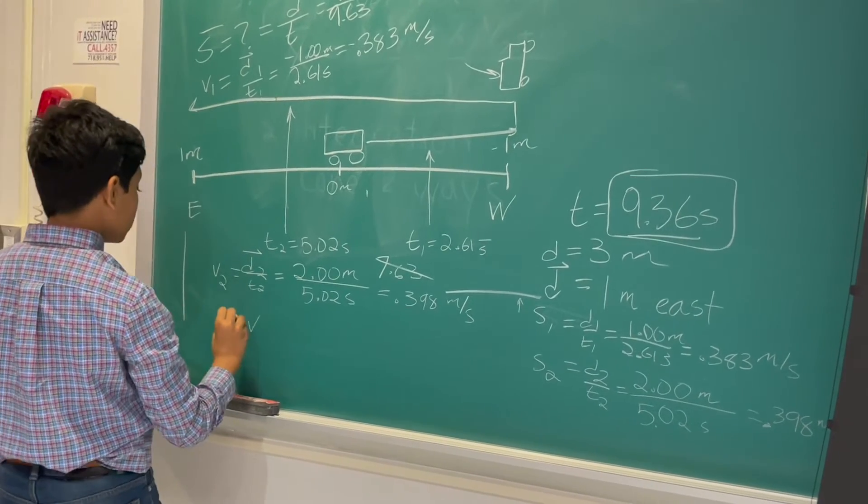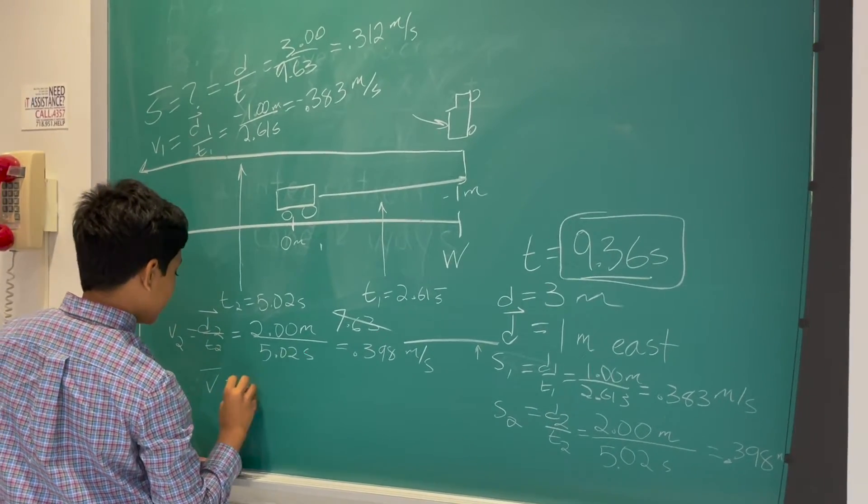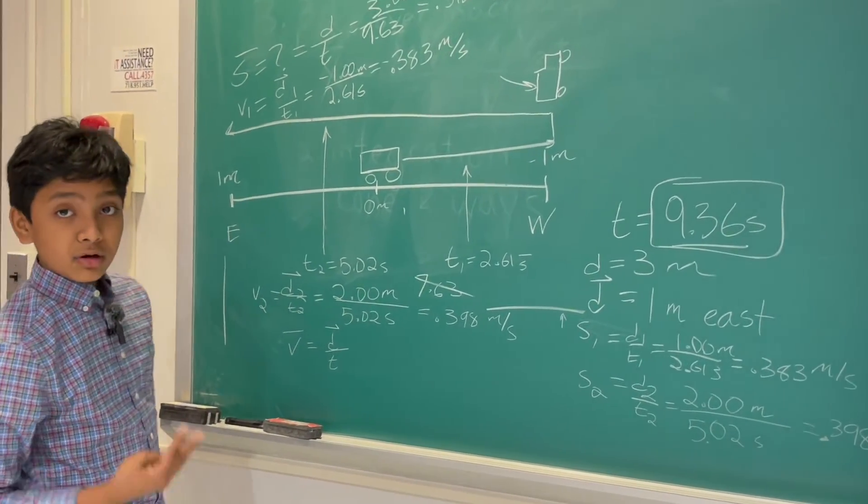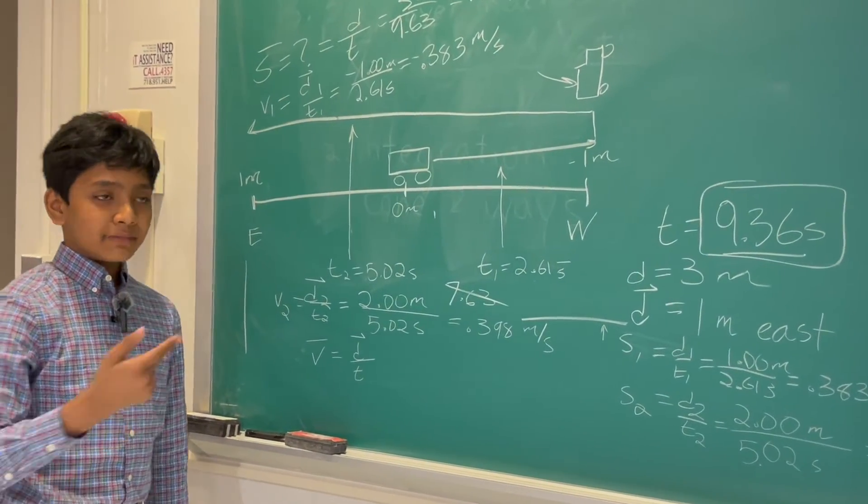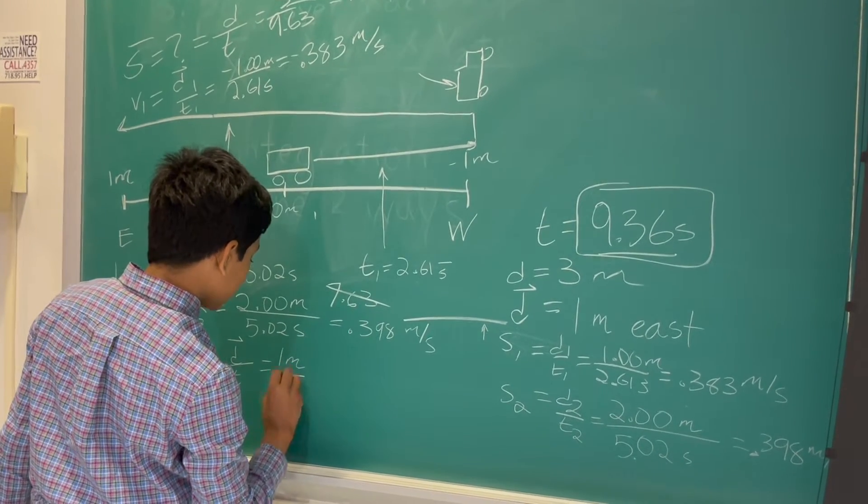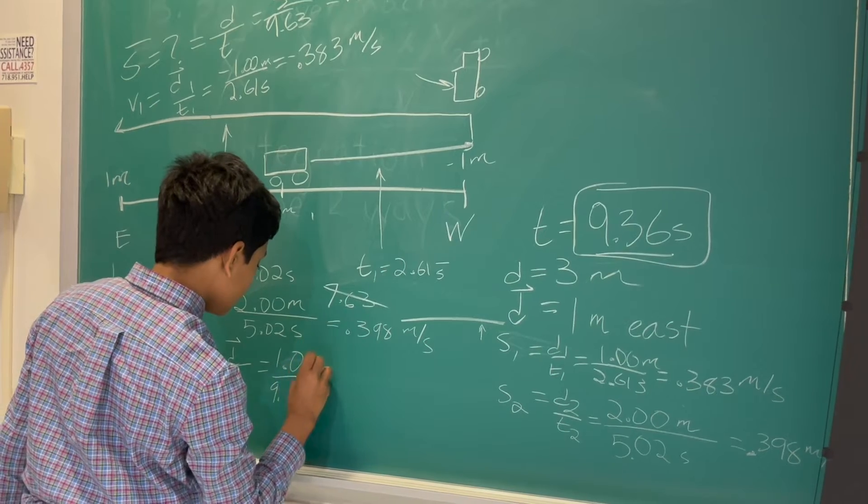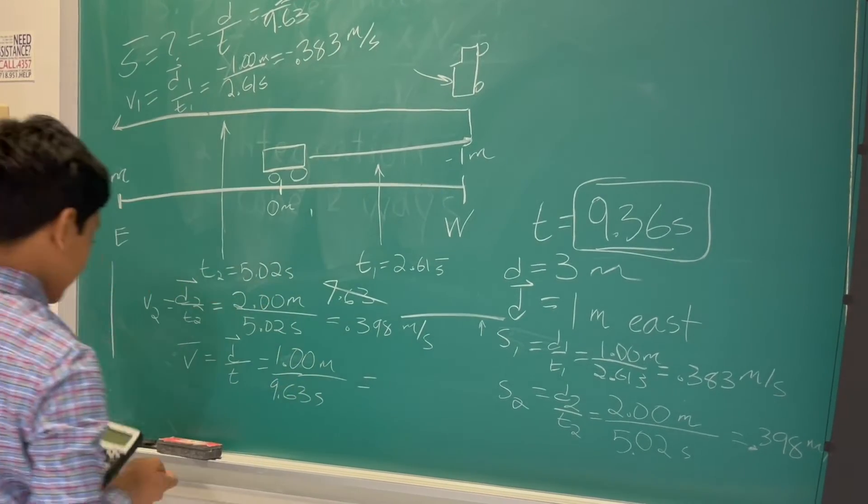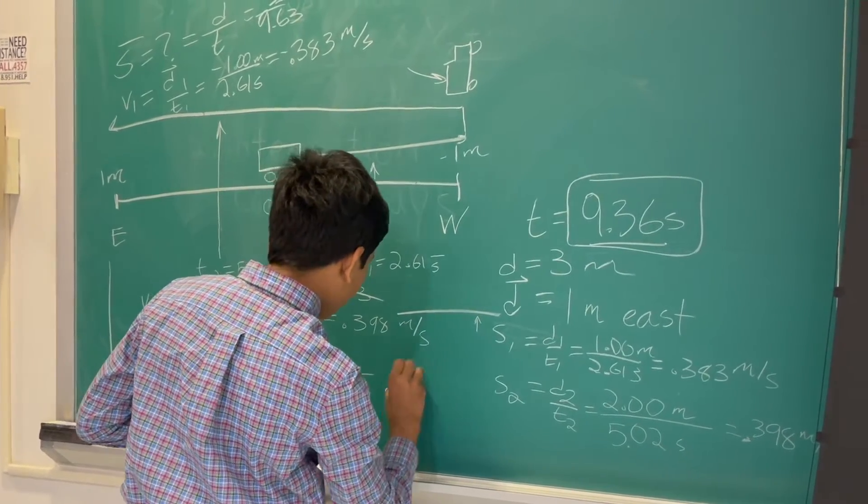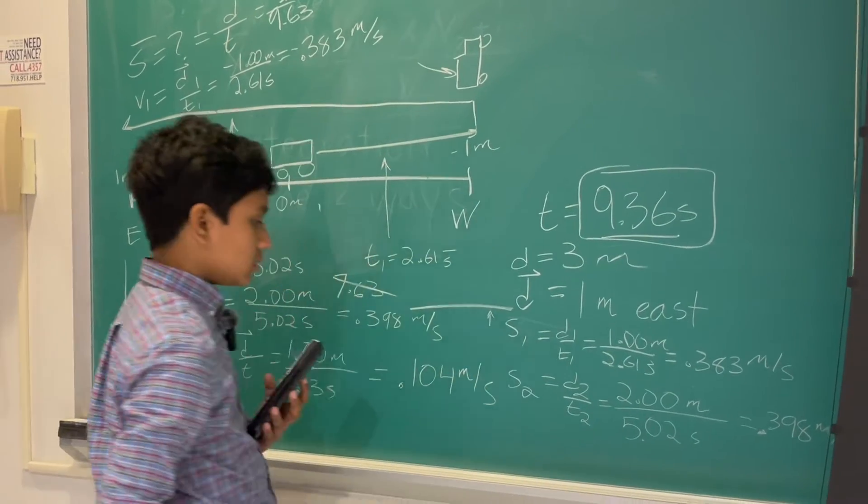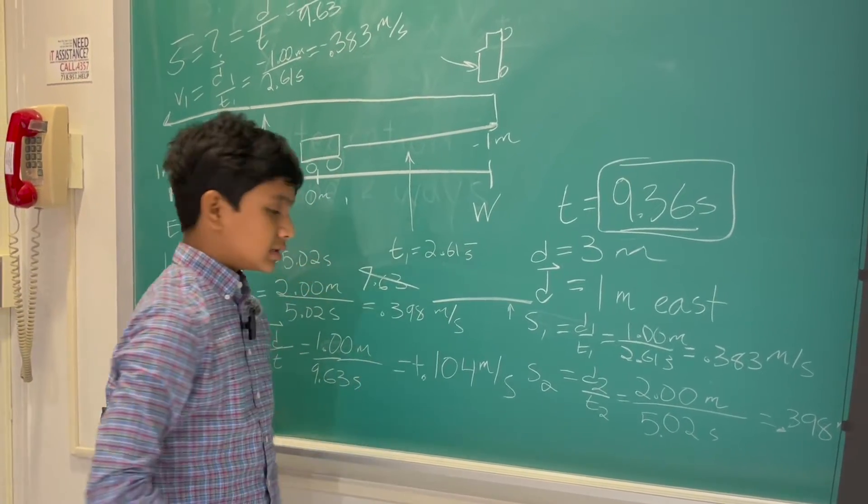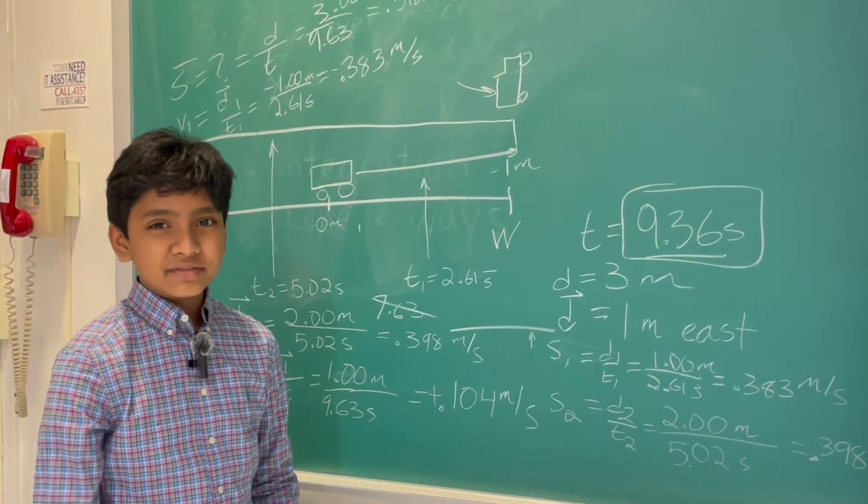And, now, we find the total average velocity, which is, once again, you have to take into account the flipping time, but you also have to take into account here that we've traveled 3 meters, but our displacement is only 1 meter, 1 meter east. So, we write 1 meter over 9.63, and that's equal to about 0.104 meters per second. That is implied because it's positive, not negative. So, you don't have to say to the east.